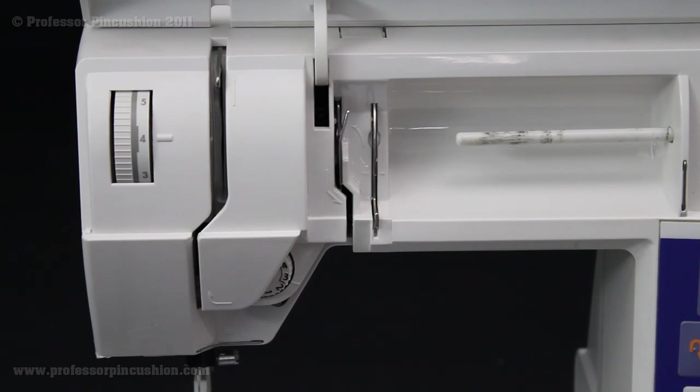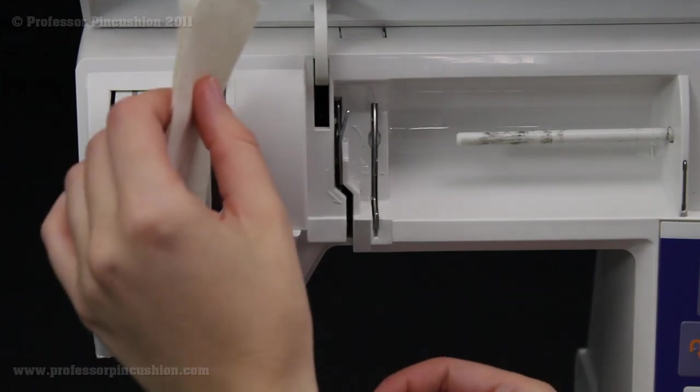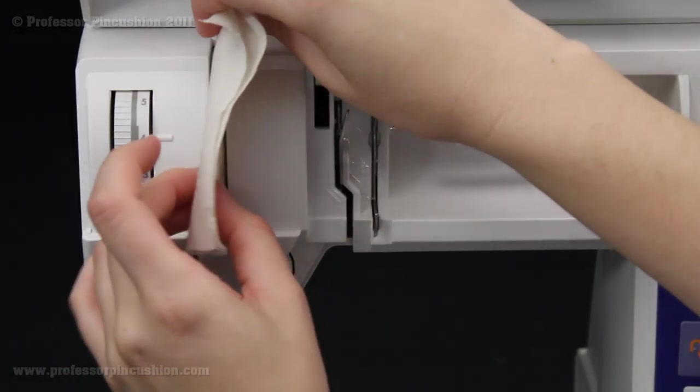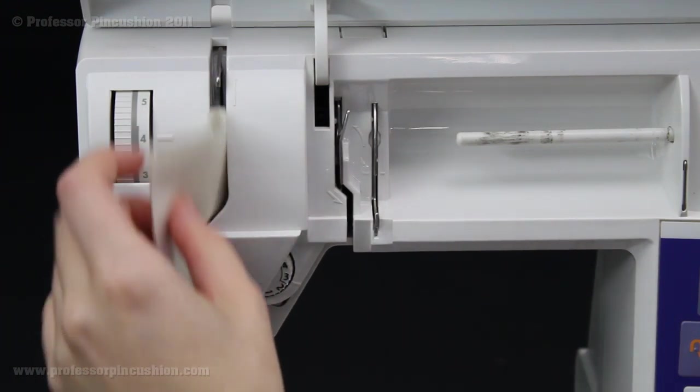So for the next step make sure that your sewing machine is unplugged. We're going to be working in this area now. So you're going to take your muslin and I have it just folded in half here and we're going to stick it in these little gaps in the sewing machine just like this very carefully. You're just going to wipe down the inside.